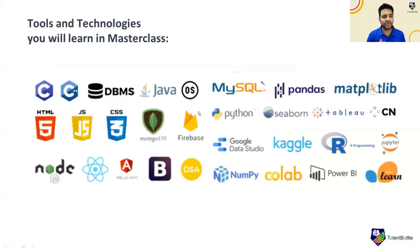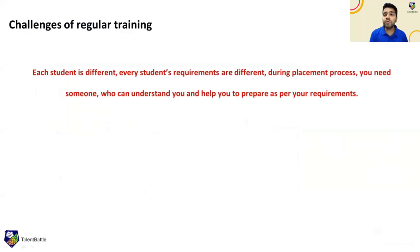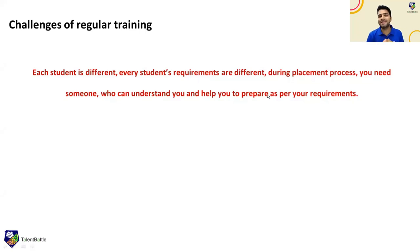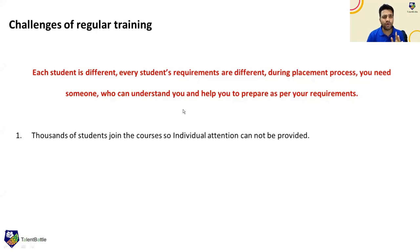There are multiple technologies which we keep on adding — these are the technologies you are going to learn in this batch. Now, what are the usual challenges of regular training? Maybe 2024, 2023, or even 2025 batch students may have gone through different trainings — offline training of two or four days at college, or online. We need to understand that each student is different and every student's requirements are also different. One student may be looking for a higher-level package, while another may just be looking for five or six LPA. During the placement process, you need someone who can understand you.